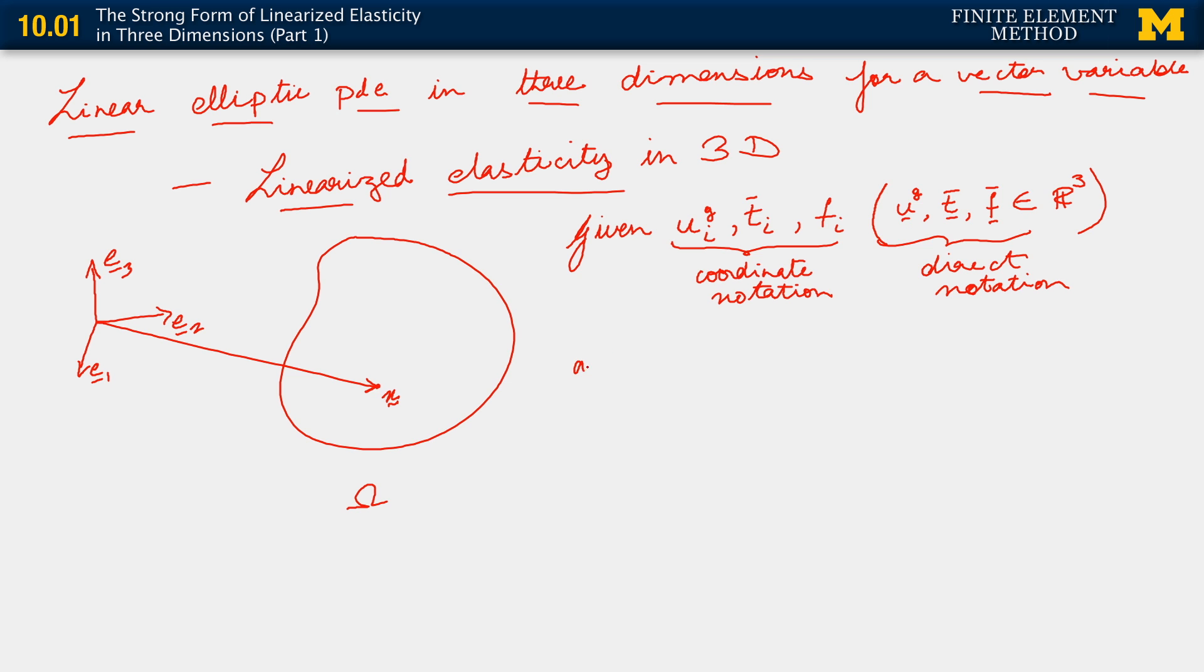Furthermore, we are given a constitutive relation. I'm going to write first in coordinate notation. The constitutive relation we are given is for the stress, the quantity that we call the stress, denoted by sigma. It is a tensor, so in coordinate notation, it has two indices, i and j. The stress is given to us through a tensor constitutive relation as equal to C_ijkl ε_kl.